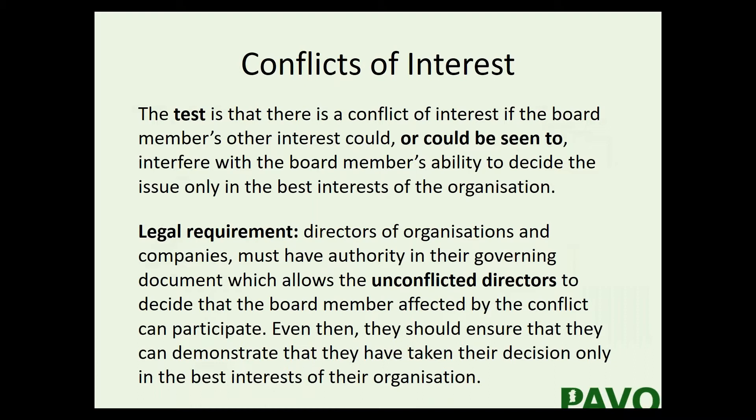So what does the conflict of interest test look like? There is a conflict of interest if the other board members feel that a board member's personal interests could, or could be seen to, interfere with that board member's ability to decide the issue only in the best interest of the organisation. Are you making that decision — and being seen to make that decision — based on its merits, or are you being influenced by an outside influence, whether that gives you a personal benefit or a conflict of loyalty elsewhere?